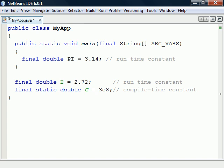With compile time constants, the compiler will replace the constant name everywhere in the code with its value. They are therefore faster than run time constants, which are not set until the program is run.